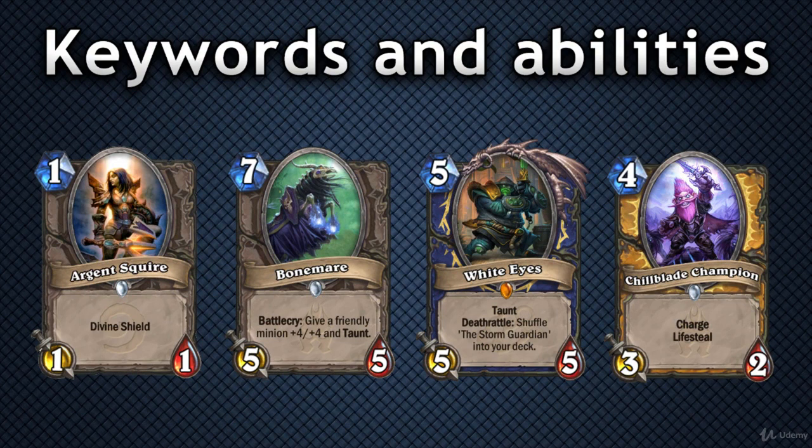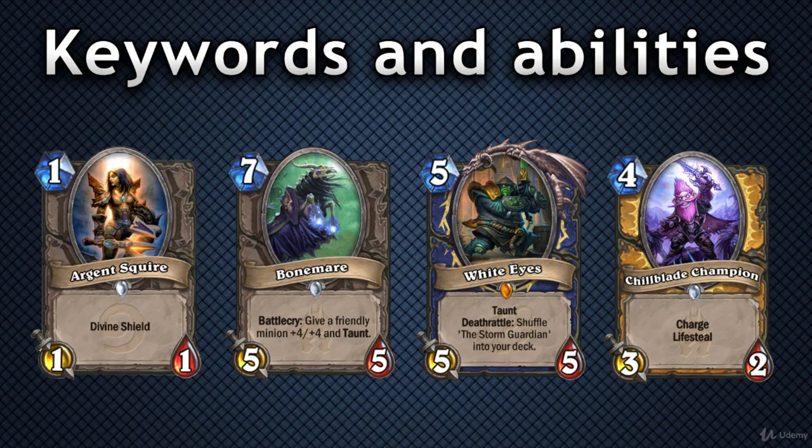Keywords are the names of abilities such as Charge or Battlecry, written in bold font on many cards. Many of them are self-explanatory and don't require any additional analysis. However, there are some exceptions and peculiarities that might not be obvious, and being aware of the exact way in which these mechanics work will help you better anticipate what's going to happen after you make your play.